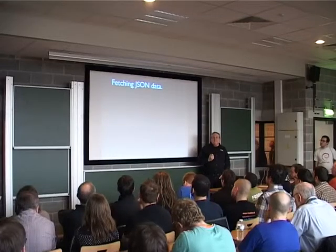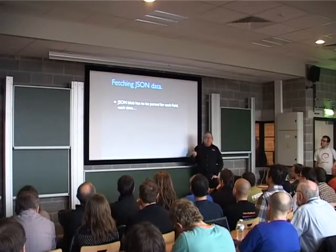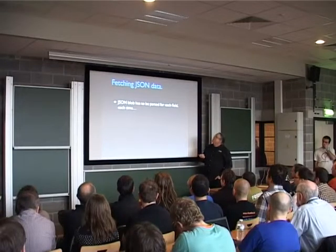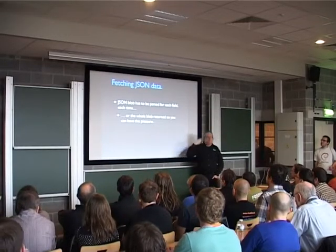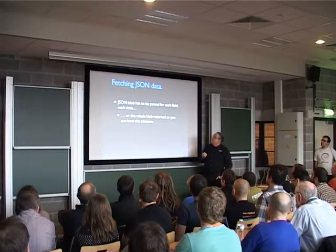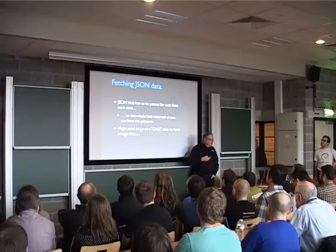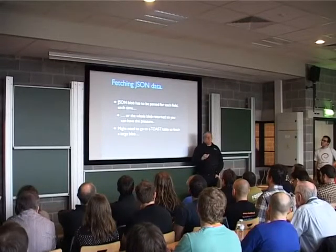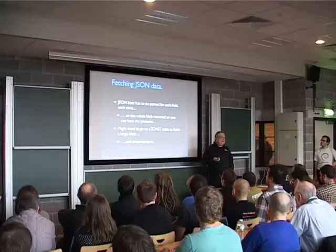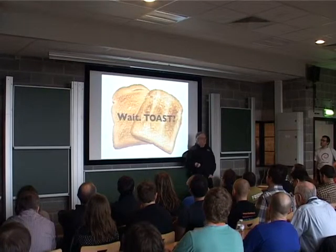JSON data, on the other hand, has to be parsed each time for each field. Or you return the whole blob, so you can have the pleasure of parsing it yourself. And it might need to go to a toast table to fetch a large blob and decompress it. So — I keep talking about this thing: toast. Who knows what toast is in Postgres? About half. The acronym is the Oversized Attribute Storage Technique.